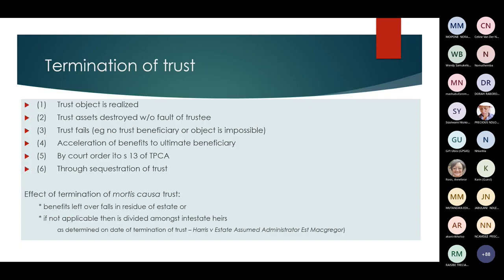A trust comes to an end when: the trust object is realized; the trust asset is destroyed without the fault of the trustee; the trust fails because there is no beneficiary or the object is impossible; there is acceleration of benefits to the ultimate beneficiary; the court orders termination; or the trust is sequestrated — where the trust has more creditors than money. The effect of termination of a mortis causa trust is that the remaining benefits fall into the residue of the estate, or, if the will didn't refer to a residue, they are divided amongst the intestate heirs.